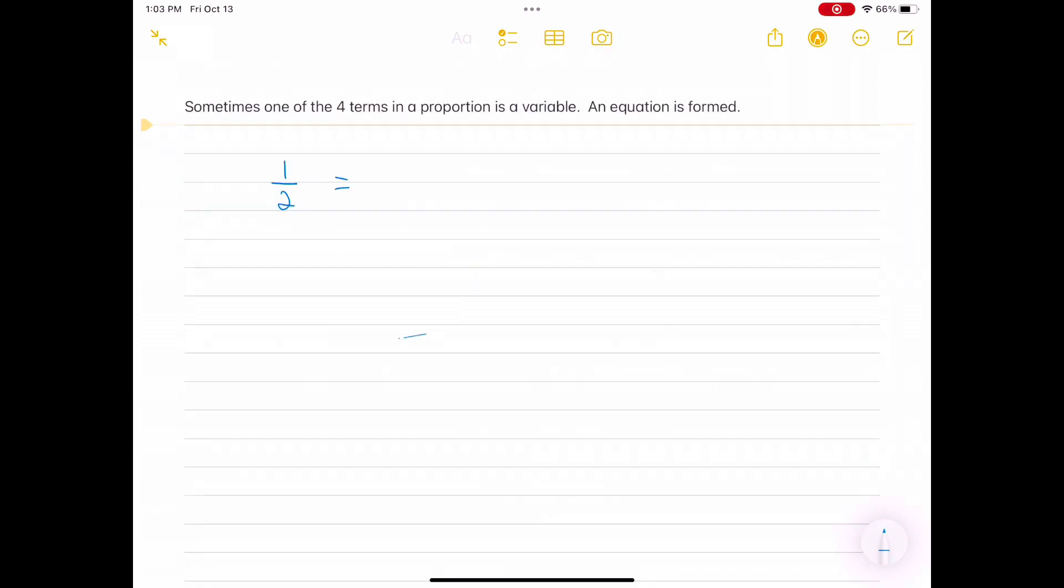Sometimes one of the four terms in a proportion is a variable. An equation is formed: one-half equals N over 4.